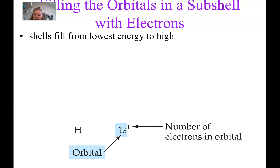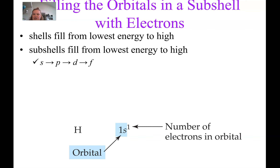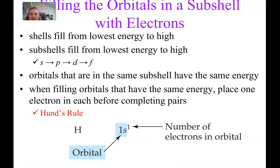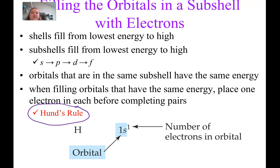We're filling from low energy to high using our cheat sheet. The third rule is Hund's rule. We did the Pauli exclusion principle — two electrons per orbital — and the Aufbau principle — low energy to high. Hund's rule says that when we're filling orbitals that have the same energy, we place one electron in each before completing the pairs. So we make them all half-filled before we fill them up. I'll show this when we do some practice problems.